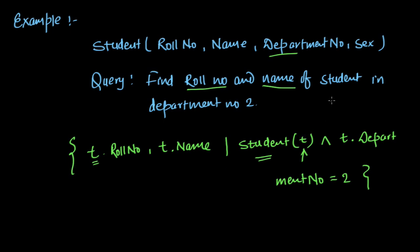And let's say we have been given: find role number and name of male students. So let's say I have a modification - male students. Then what I will do: I will again add another condition here with AND, that t.sex = male.